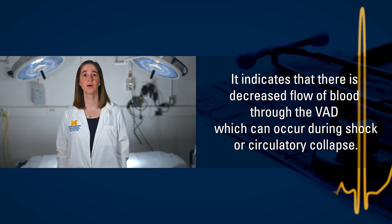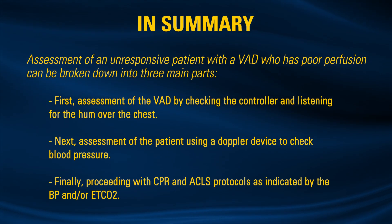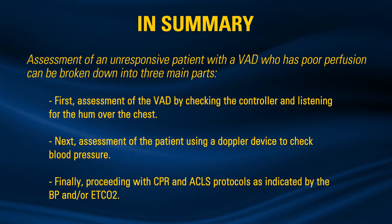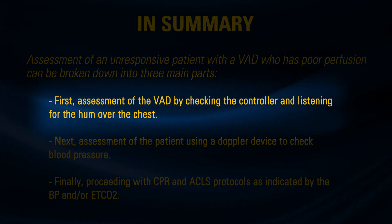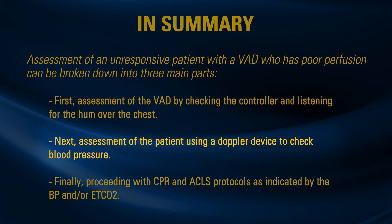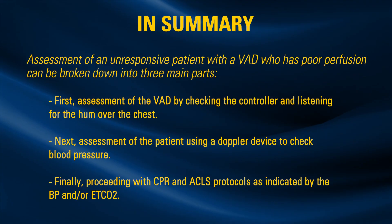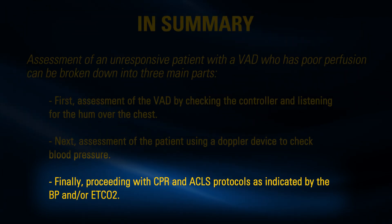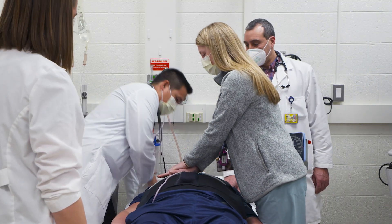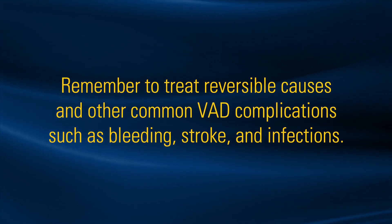In summary, assessment of an unresponsive patient with a VAD who has poor perfusion can be broken down into three main parts. First, assessment of the VAD by checking the controller and listening for the hum over the chest. Next, assessment of the patient using a Doppler device to check blood pressure. Finally, proceeding with CPR and ACLS protocols as indicated by the blood pressure or end-tidal CO2. Remember to treat reversible causes and other common VAD complications, such as bleeding, stroke, and infections.